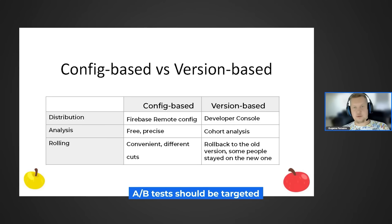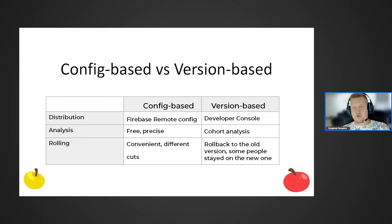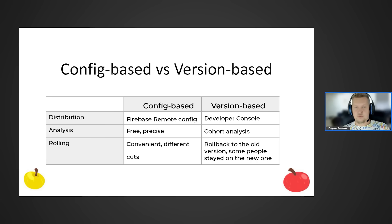An A-B test should be targeted. You should always make the changes you're testing atomic — if you make two changes and one has a positive effect while the other has a negative one and you break even, you'll never know which change was good and which was bad. You either keep both or roll both back, and as a result you don't end up with the most optimal version.